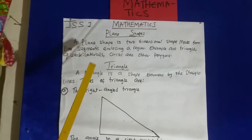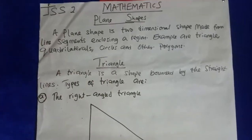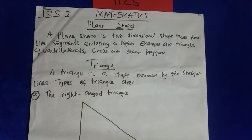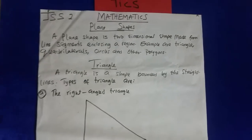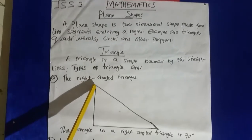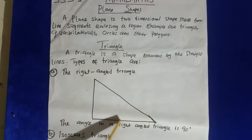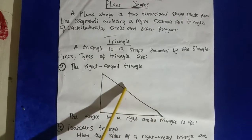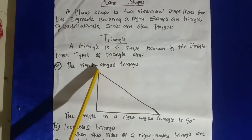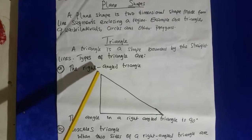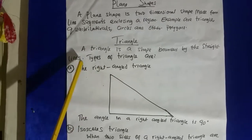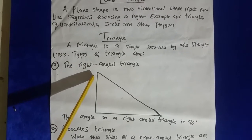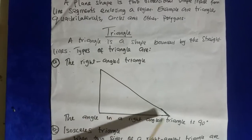Now, triangle. A triangle is a shape bounded by straight lines. Don't forget our definition of lines — it's a shape that is bounded with a straight line.